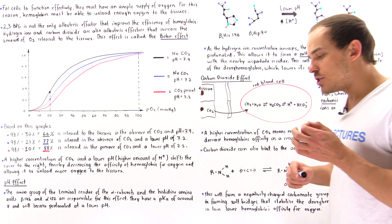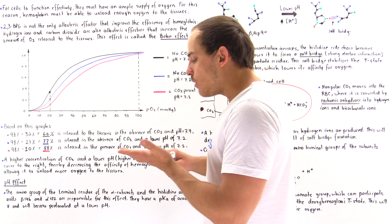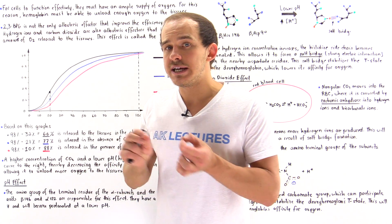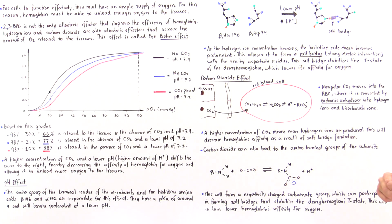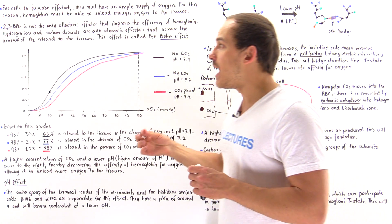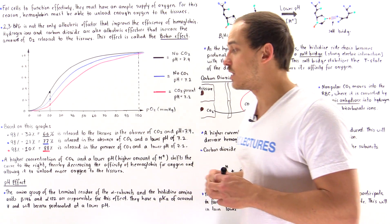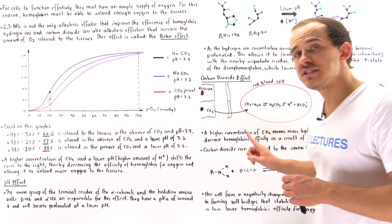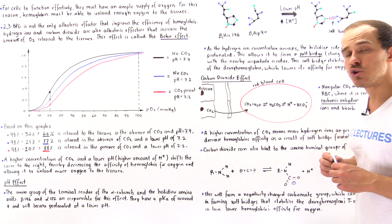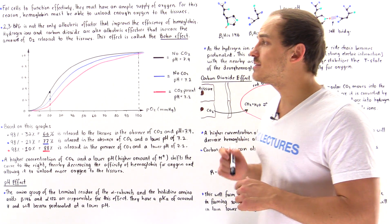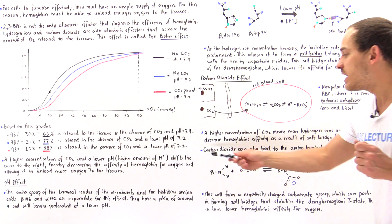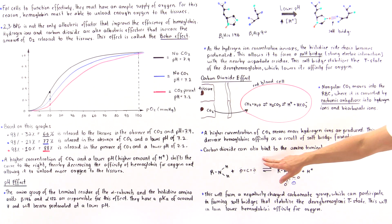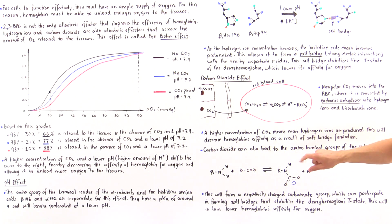The next question is: how does CO2 directly affect hemoglobin's affinity for oxygen? Just as H+ ions bind onto the hemoglobin molecule at special groups, CO2 molecules can also bind onto hemoglobin at special groups.